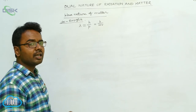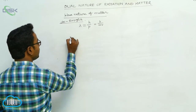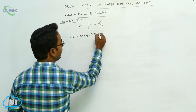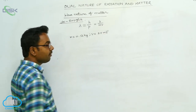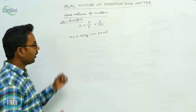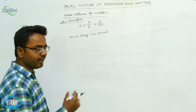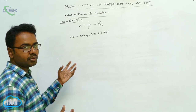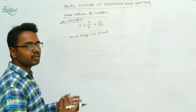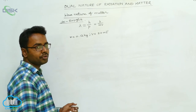Now let us take an example. There is a ball having mass m equals 0.12 kg, traveling with a velocity of 20 meters per second. Is there any wave associated with it? Yes, there is a matter wave associated with it, since it is made up of matter. Let us find the wavelength of the matter wave associated with this ball.